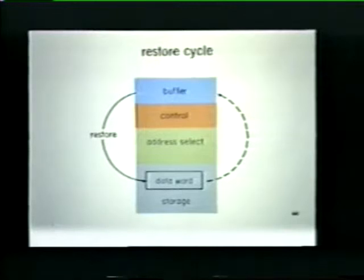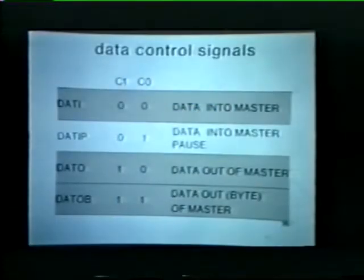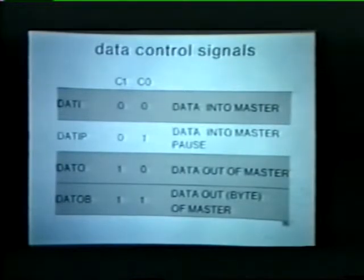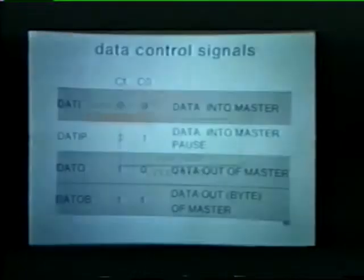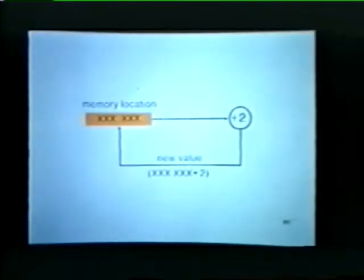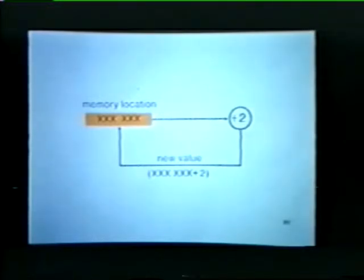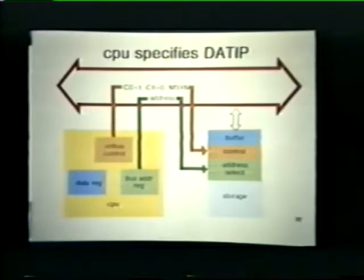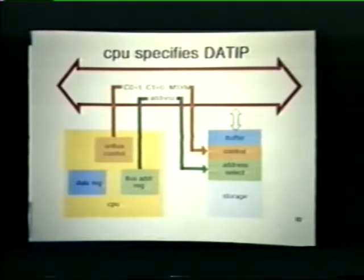That completes our discussion of a typical data I. Now let's look at data IP transfers. A master device selects the data IP transfer if data is to be read from memory and can then be discarded. For example, the master device may wish to read a word from memory, increment the word by two, and then store the new value in the original memory location. The CPU specifies a data IP transfer by asserting C0 and by clearing C1. It also issues a master sync signal and places a memory address on the unibus.